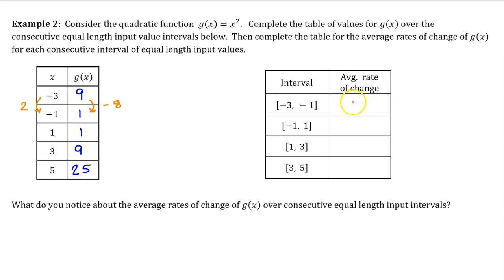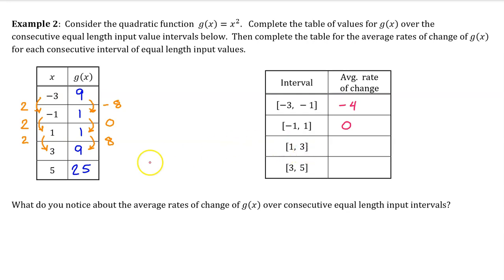Now let's calculate the average rate of change on the interval from negative 3 to negative 1. The change in output values is negative 8 and the change in input values is positive 2, so the average rate of change is negative 8 divided by 2, which is negative 4. On the interval from negative 1 to 1, the change in output is 0 and the change in input is 2, so the average rate of change is 0. On the interval from 1 to 3, the change in output is 8 and the change in input is 2, giving an average rate of change of 4. For the interval from 3 to 5, the change in output is 16 and the change in input is 2, so the average rate of change is 8.